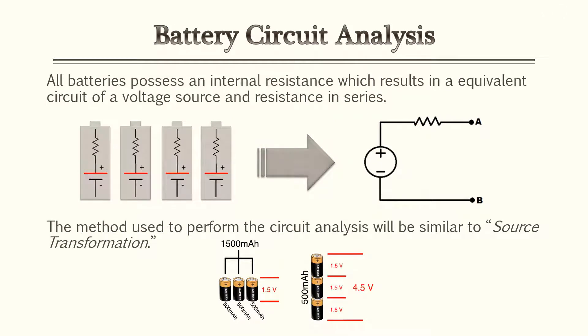When performing battery circuit analysis, be aware that all batteries possess an internal resistance. If you have a 12-volt battery with a load in series, the load may not see the full 12 volts because internal resistance absorbs some voltage. A method to be familiar with is source transformation, which we've covered in previous videos and will apply in the upcoming examples.